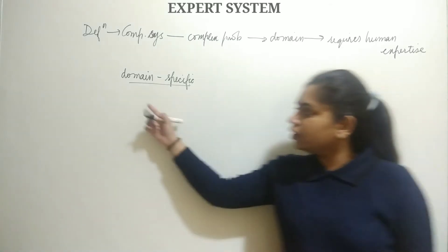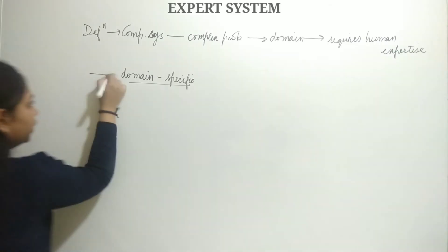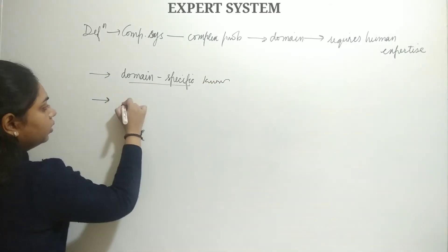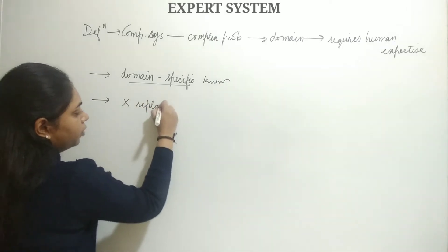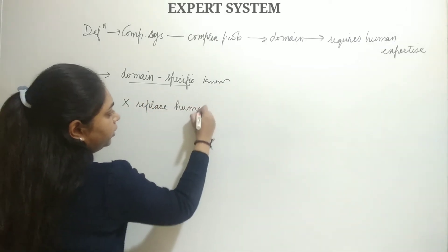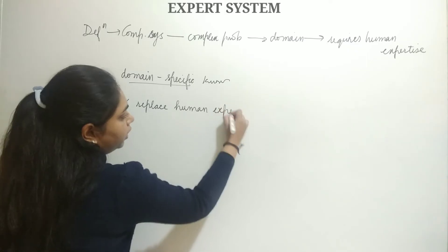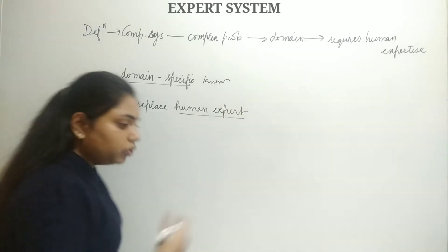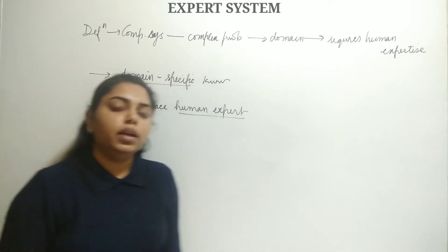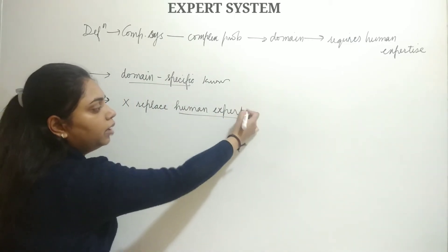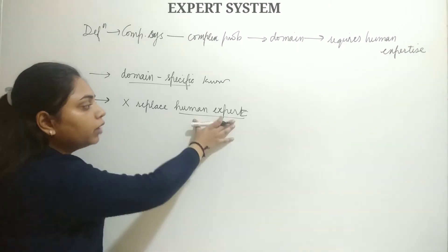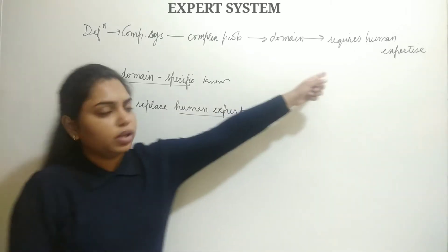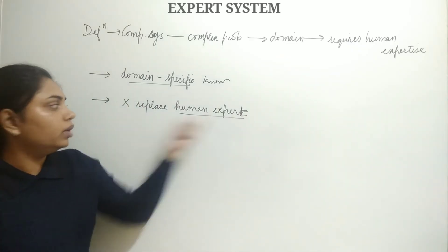Expert systems use domain specific knowledge. Importantly, they do not completely replace the human expert. The expert system assists the non-expert by providing expert-level guidance, but it cannot fully replace human experts.